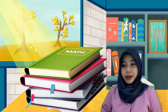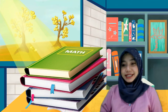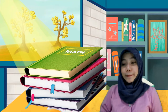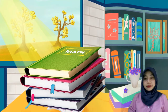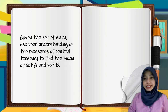Do you still remember our topic last time? We have discussed about the measures of central tendency, which are the mean, median, and the mode. To review, let's have this activity. Given the set of data, use your understanding in the measures of central tendency to find the mean of set A and set B.